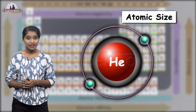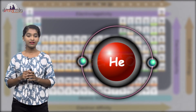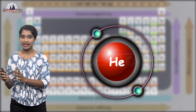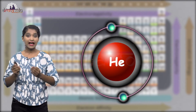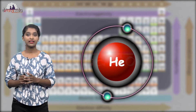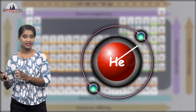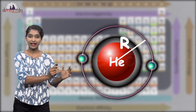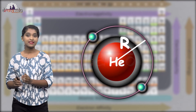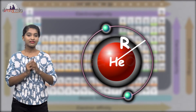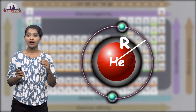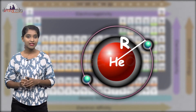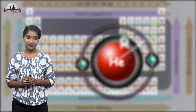The term atomic size refers to the radius of an atom. It may be visualized as the distance between the center of the nucleus and the outermost shell of an isolated atom. Atomic size decreases across the period from left to right, and it increases as we go downwards the groups.